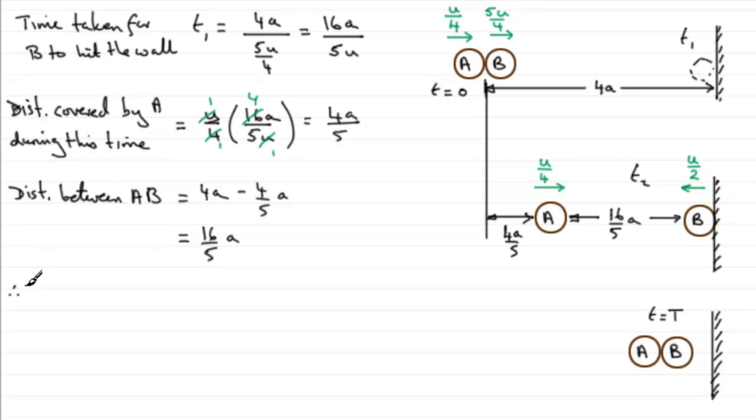So, therefore, we can get the time taken, time taken t2 for A and B to collide again. That time t2 is going to equal the distance, 16a over 5, divided by the speed, the relative speed, which we've said is 3 quarters u, 3u over 4. And if we multiply top and bottom here by 20, a value that 4 and 5 go into, we can then cancel. We get 16a times 4, giving us 64a, and then 3u times 5 is 15u. So that's the time t2.